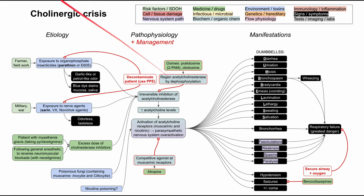This is a mechanism of disease map for cholinergic crisis, the same thing as organophosphate poisoning, and we'll be talking about the many manifestations of this toxidrome. As in all of these flowcharts, each box is color-coded according to the legend at the top right. We'll start with the central tenant of cholinergic crisis, work back through the etiologies, discuss the manifestations, and give some tips for management at the end.